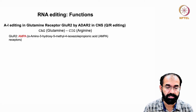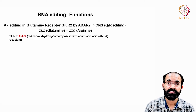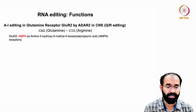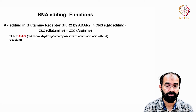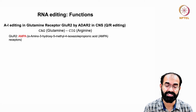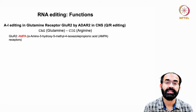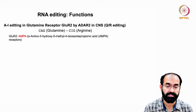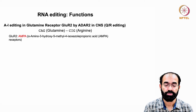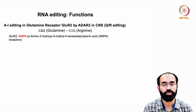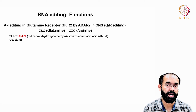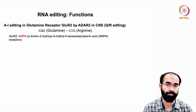The codon CAG, which encodes glutamine, is changed into CIG, which encodes arginine. This is an important change occurring in the GluR2 receptor. Normally, neurotransmitter receptors are made of multiple subunits — GluR1, GluR2, GluR3, GluR4 — and typically five units come together to form the receptor.